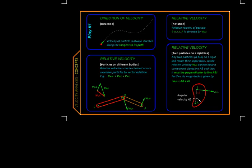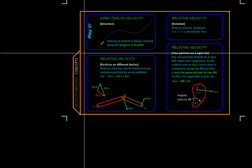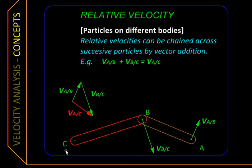Suppose we have a few links which are connected together like this here. Then the velocity of A relative to B, so this is velocity of A relative to B plus velocity of B relative to C, will give us the velocity of A relative to C.